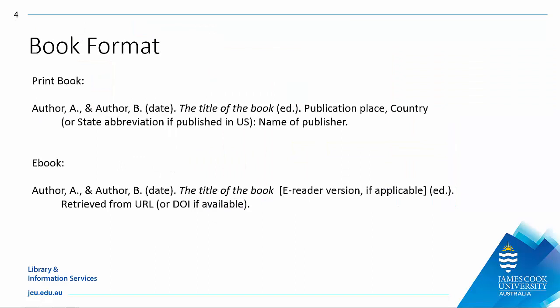Once you have all the information, put it together in the correct APA format. Start with the author or authors' surnames followed by their first initial — never their full name — then the year of publication in brackets. The title of the book is in italics and sentence case, meaning you only capitalize the first word of the title and subtitle and any proper nouns or acronyms. Include the edition in brackets unless it is the first edition. Then add the place of publication and publisher. APA has different rules depending on where the book was published: if published in the US, list the city name and the two-letter state abbreviation; if published in another country, list the city name and the country of publication.